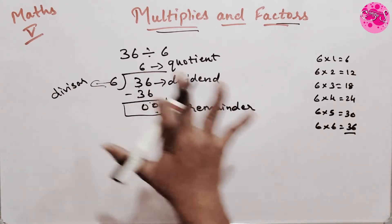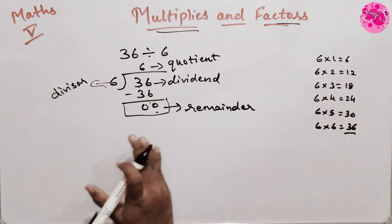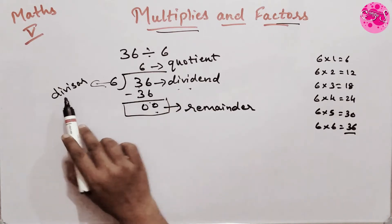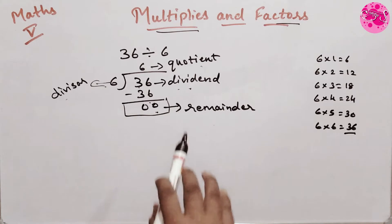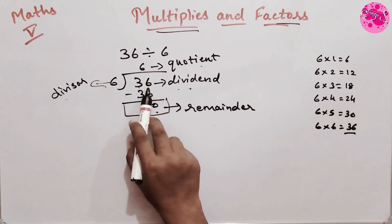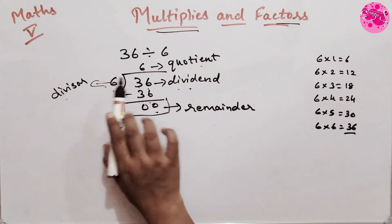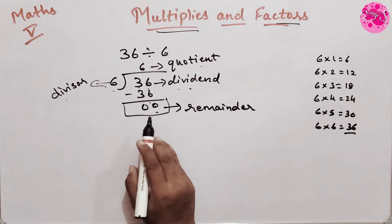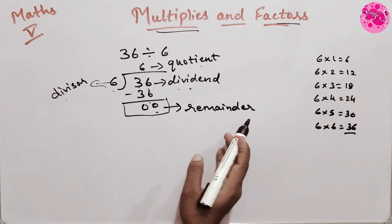Children, you all know this very well. In lower standard we learned what we call Dividend, then Divisor, then Quotient and Remainder. So the Dividend 36 when divided by the Divisor 6, the remainder is 0. So 36 is divisible by 6.